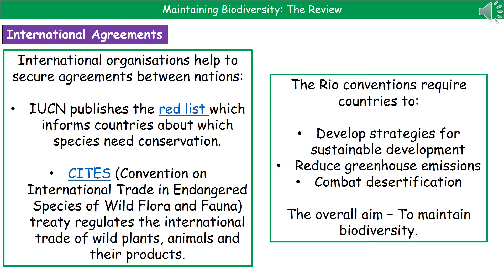As a result of the Rio Earth Summit back in 1992, the Rio conventions came about. These require countries, firstly, to develop strategies for sustainable development — the idea that if you cut down a tree, you plant another one in its place. Secondly, to reduce greenhouse emissions, which is still an ongoing battle. And thirdly, to combat desertification. The overall aim is to maintain biodiversity, and this brought together world leaders who signed up to attempt to do this.